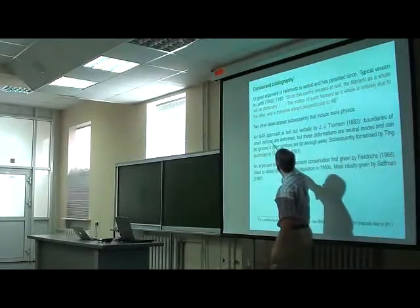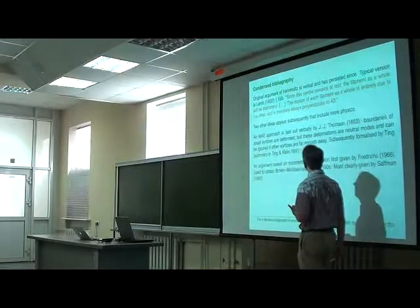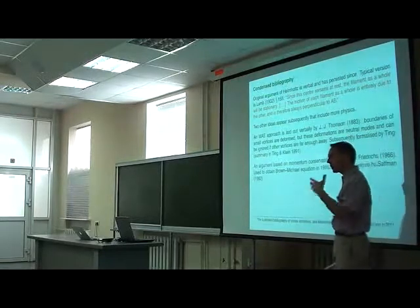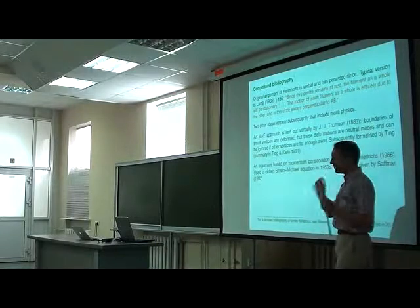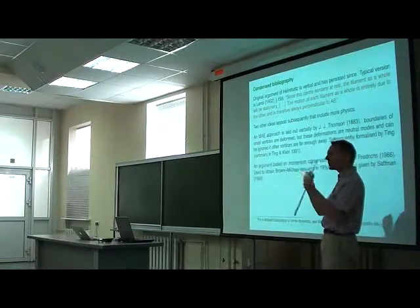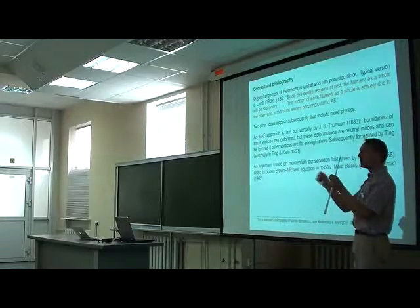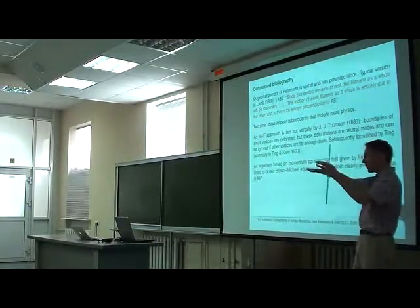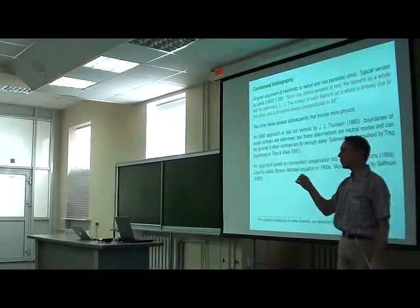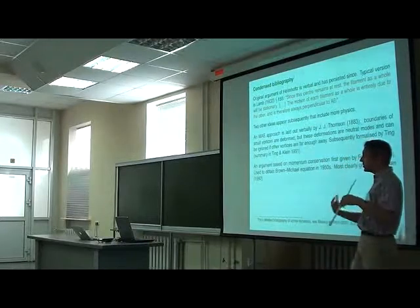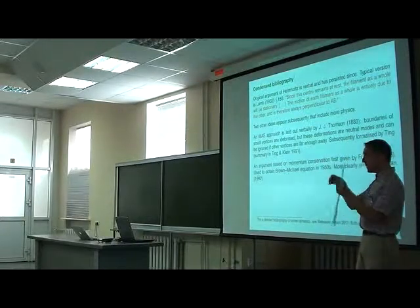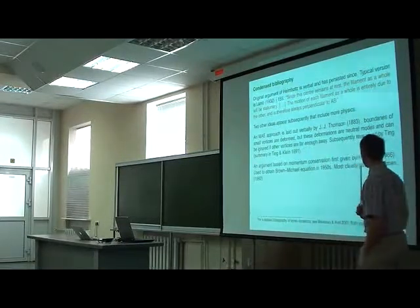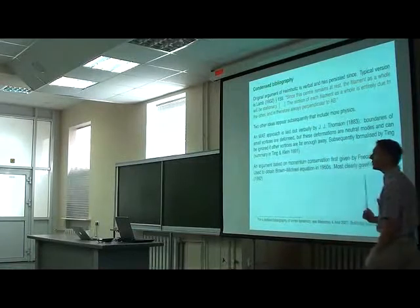There are two other ideas that are very interesting that we use to discuss vortex motion. One is what I call MAE, a matched asymptotic expansion approach, which was first written down by, essentially, verbally, J.J. Thompson, who then discovers the electron later. His argument is that if I have an array of vortices with some internal structure, if the vortices are far enough away, locally, they will be deformed by the straining field of the entire fluid, but the deformations are neutral modes. They do not grow. So from a large distance, I don't see them. And the vortices behave locally like point vortices. This argument was formalized later by Ting, and I'll come back to it.